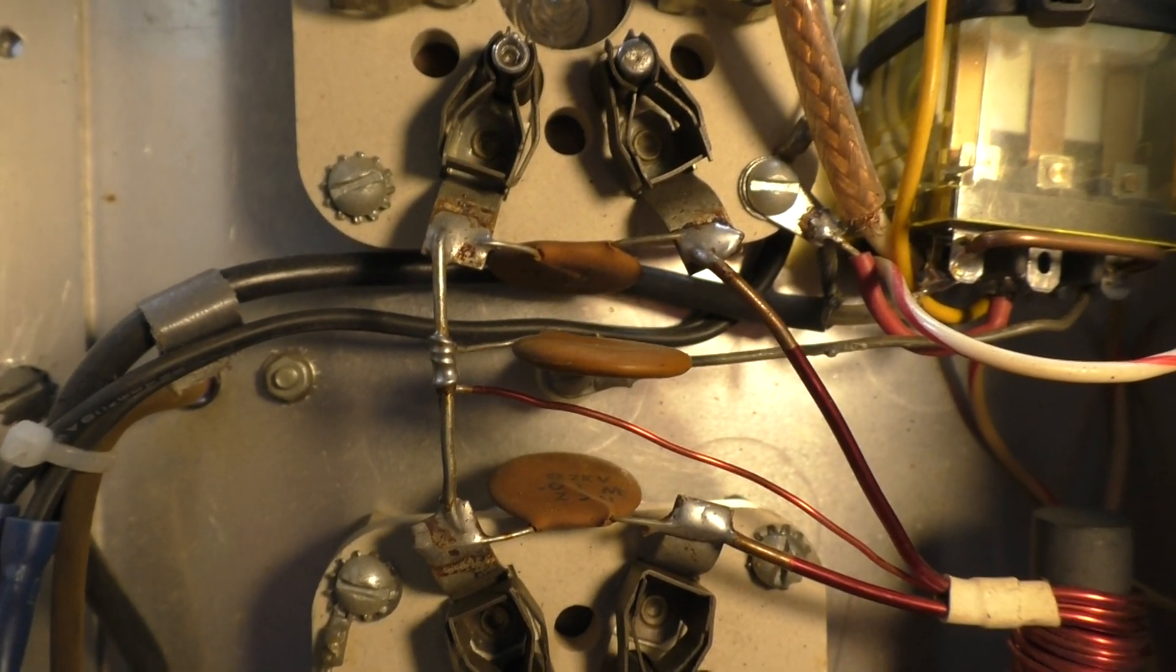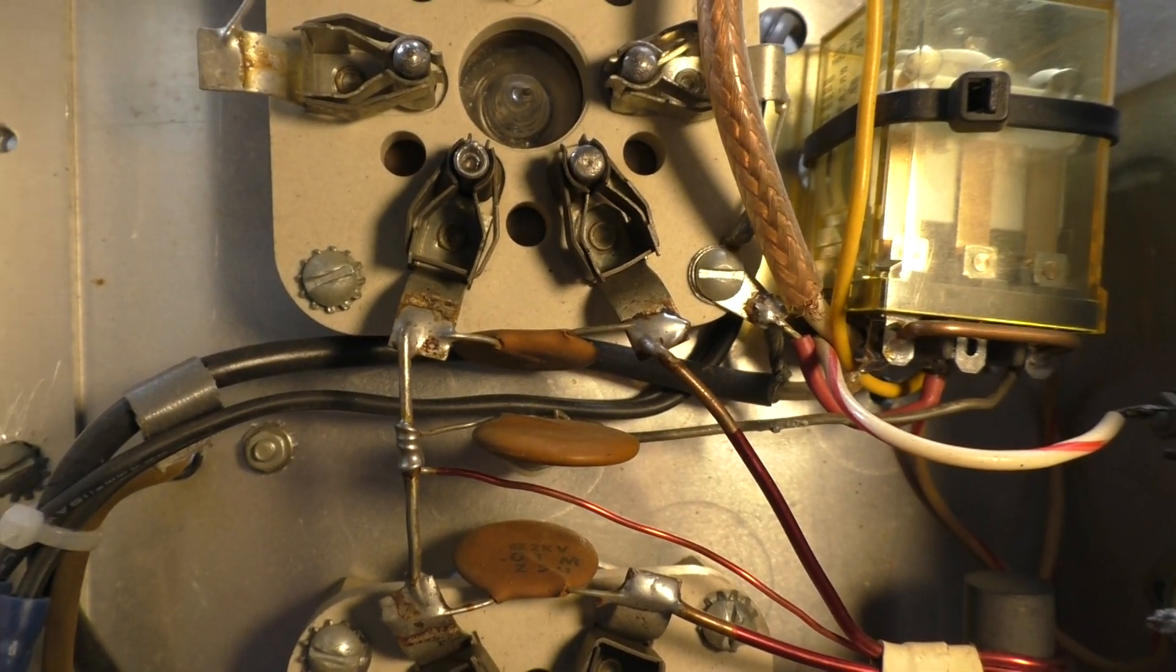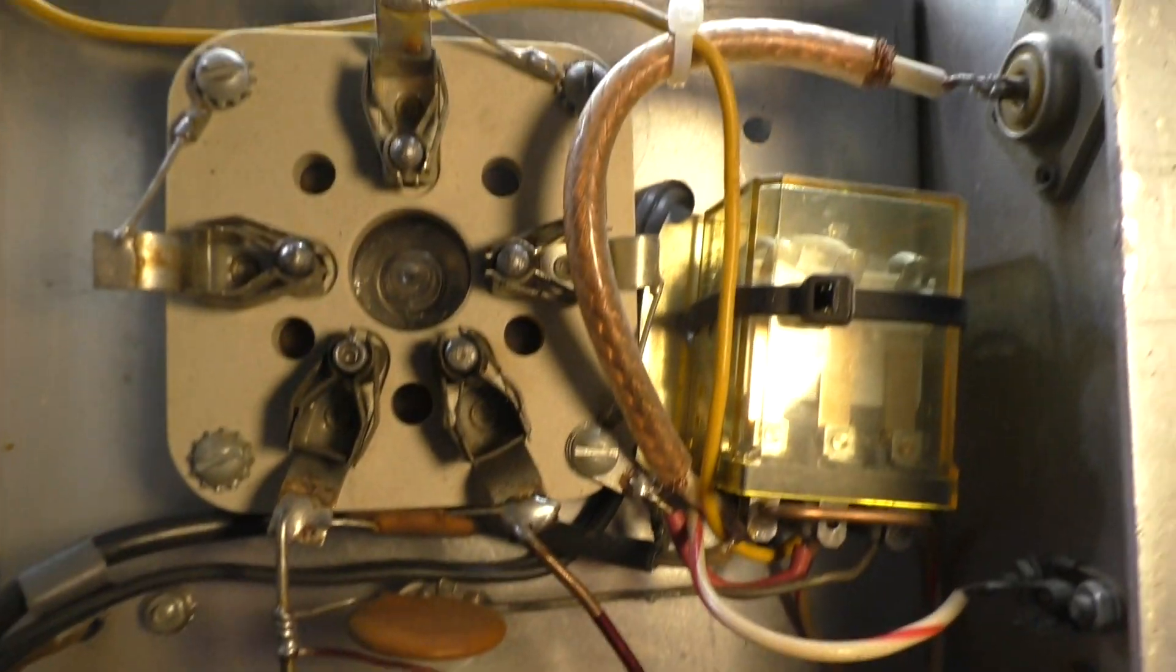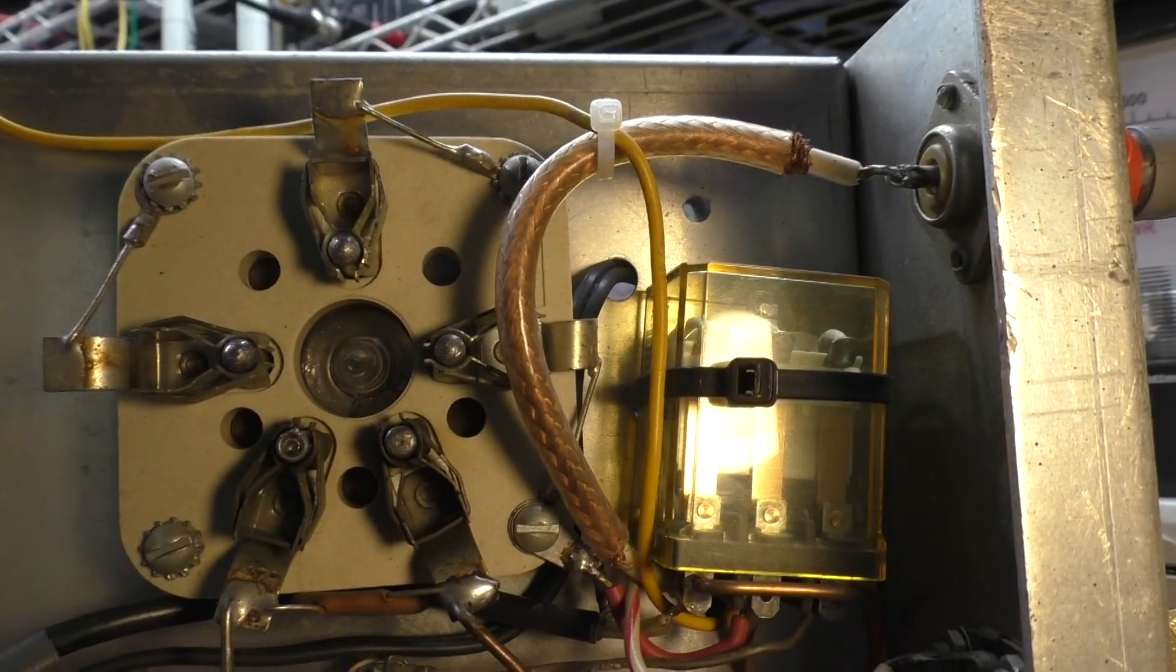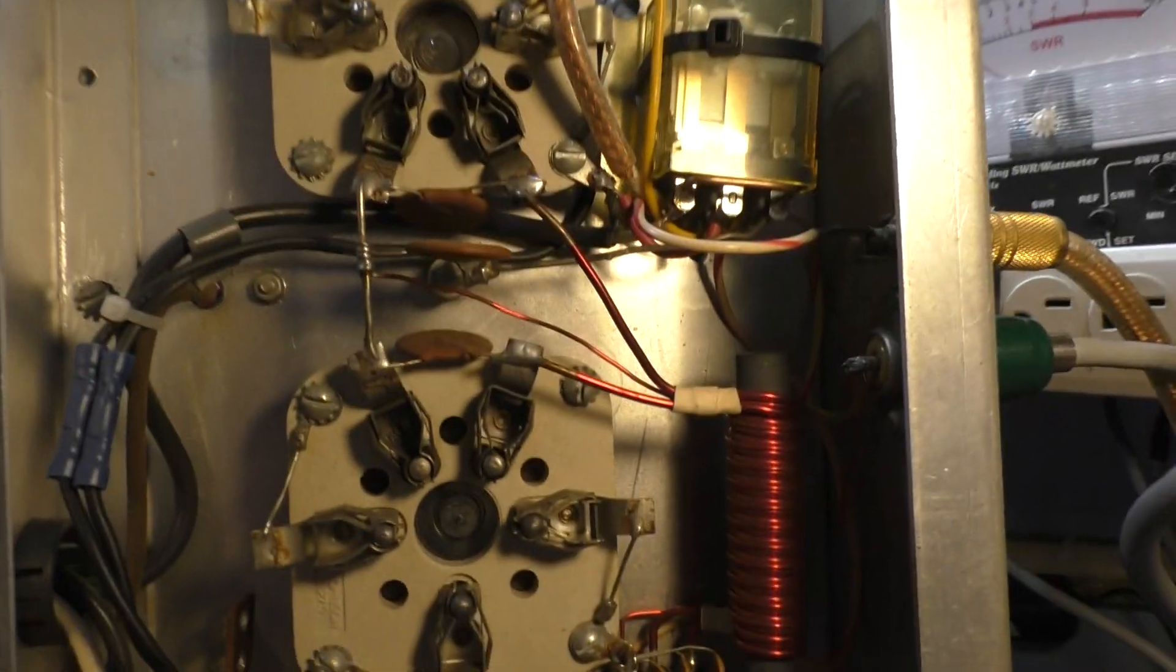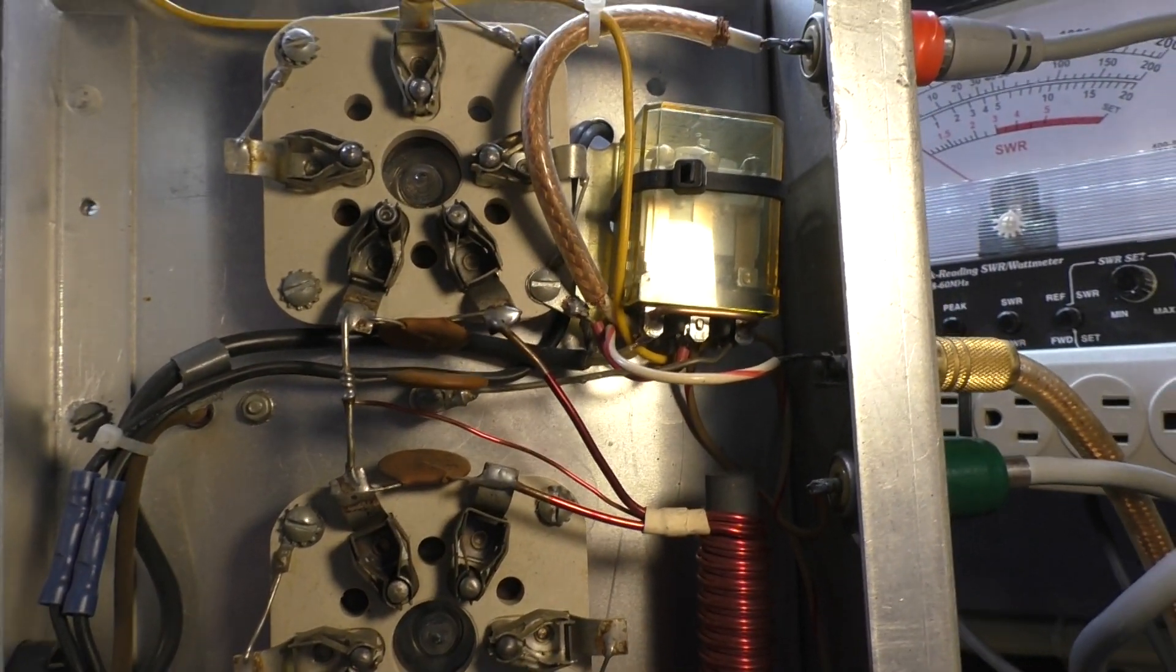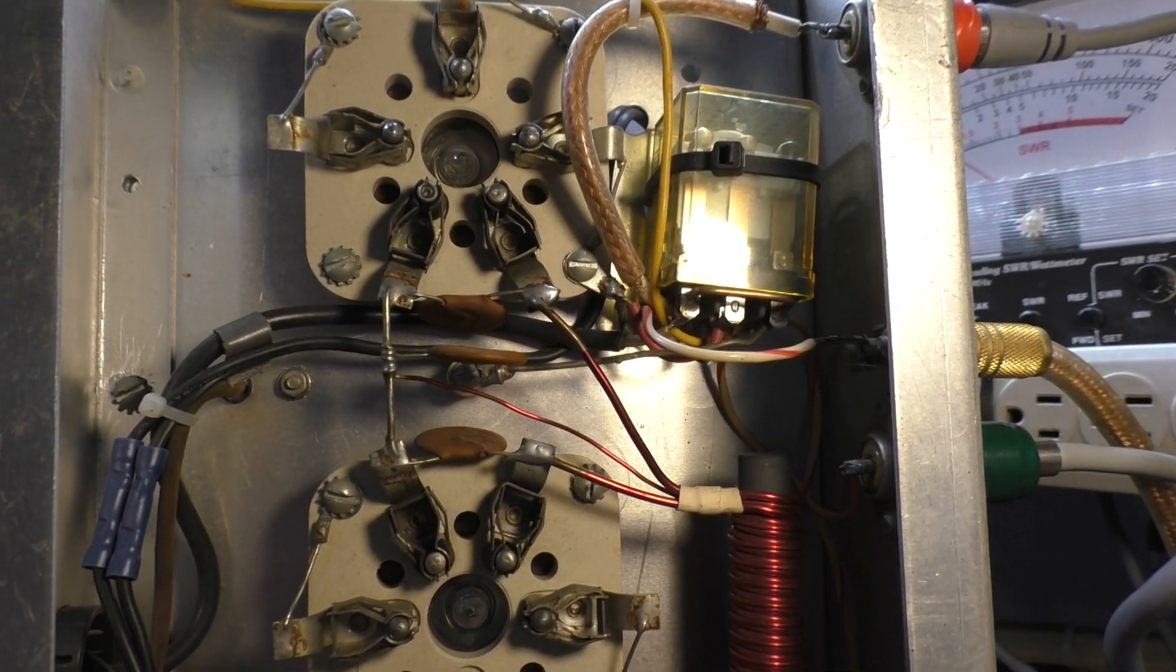You can get away with that with a pair of 3500Z because the input of a 3500Z single is about a hundred ohms. Two of them in a pair is going to be about 50 ohms, so you're going to have a halfway decent input even without a tuned input.